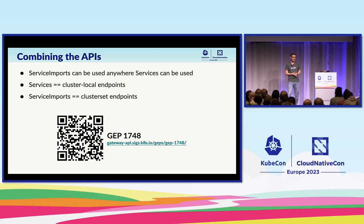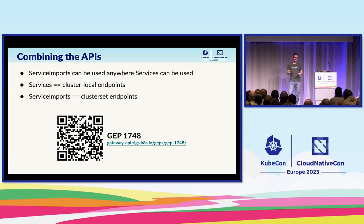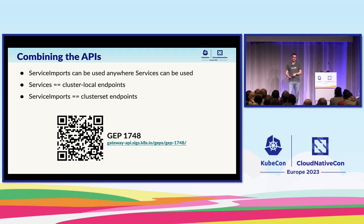We spent a lot of time talking about how to combine these two APIs. As you'd expect in Kubernetes, it takes a while to nail down these standards, and there's a lot of nuance. We wrote a whole GEP — a Gateway Enhancement Proposal — about how these two APIs interact. The high-level summary is that anywhere you can use a service in Gateway API, you can use a service import. So anywhere you can use a service, you can replace that with a multi-cluster service. That's what we're going to be covering in today's talk.